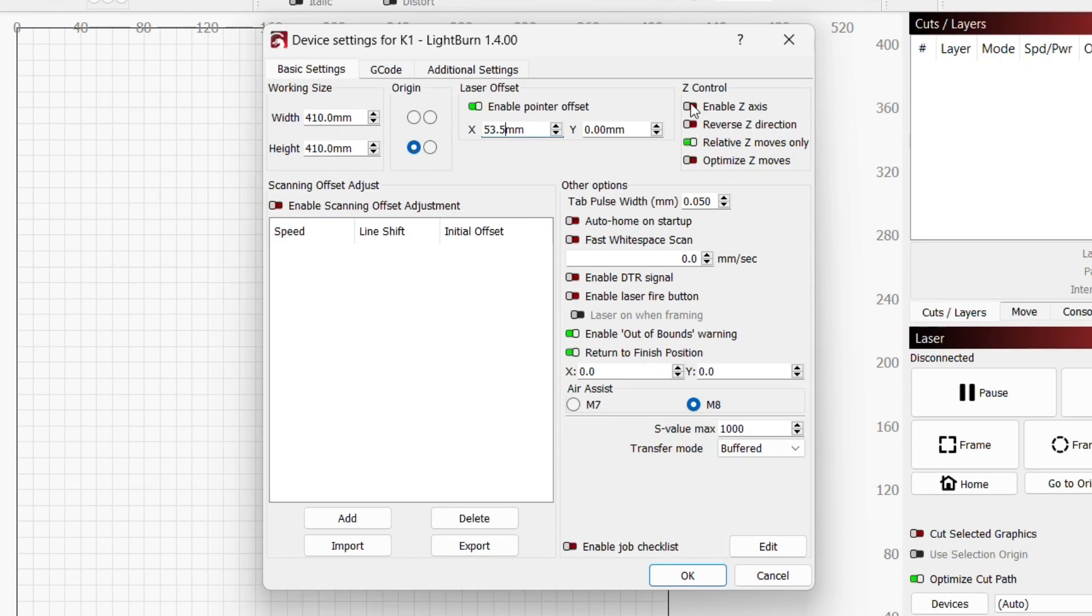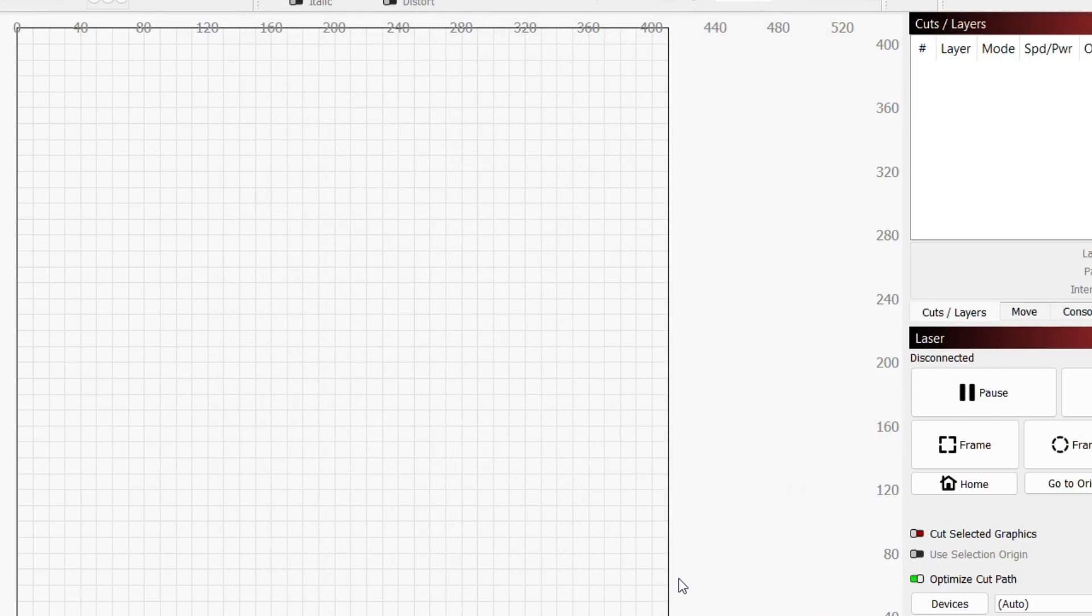I'm also going to enable the Z axis and make sure the air assist is set to M8. And now we're ready to start cutting and engraving.